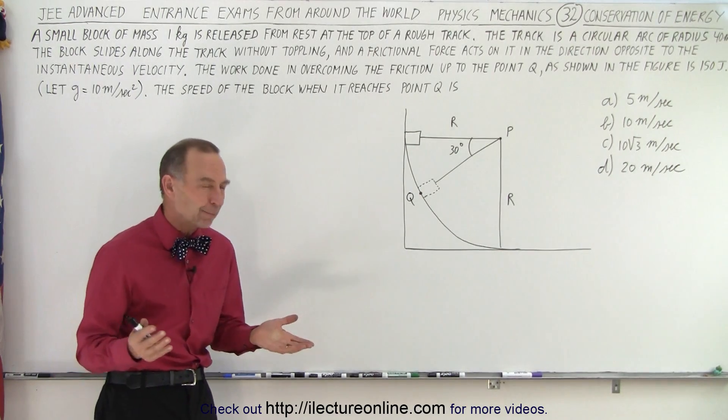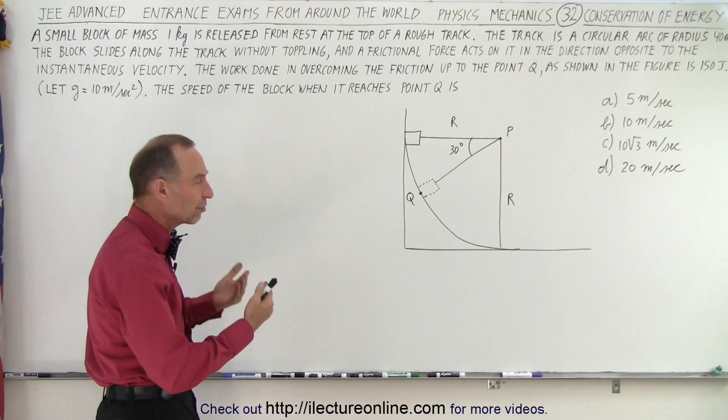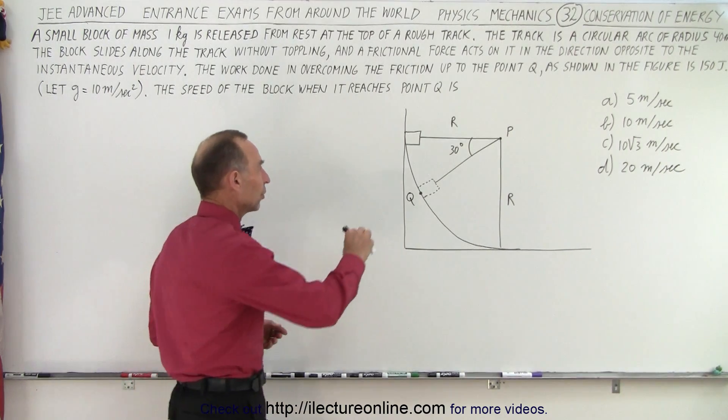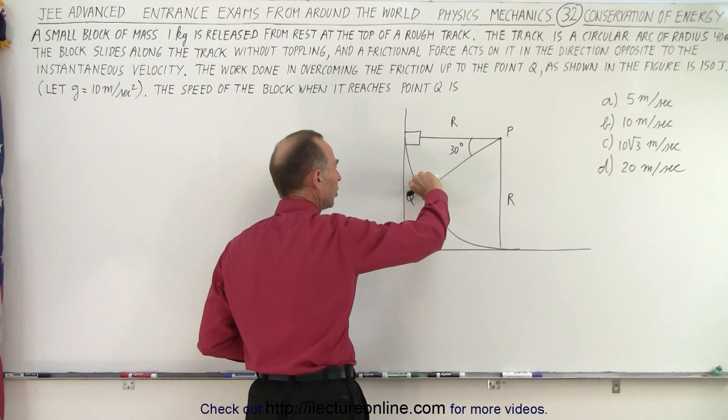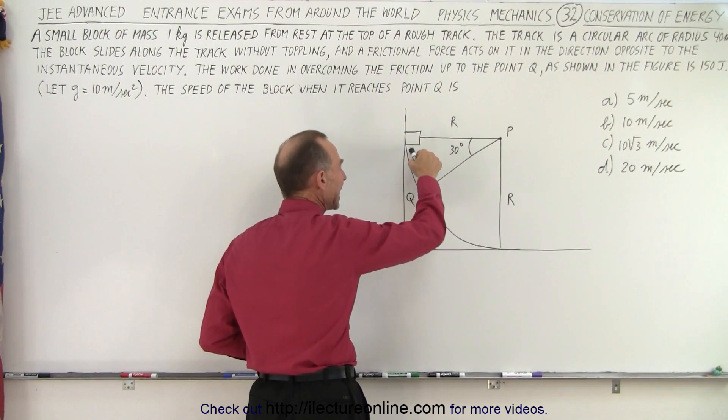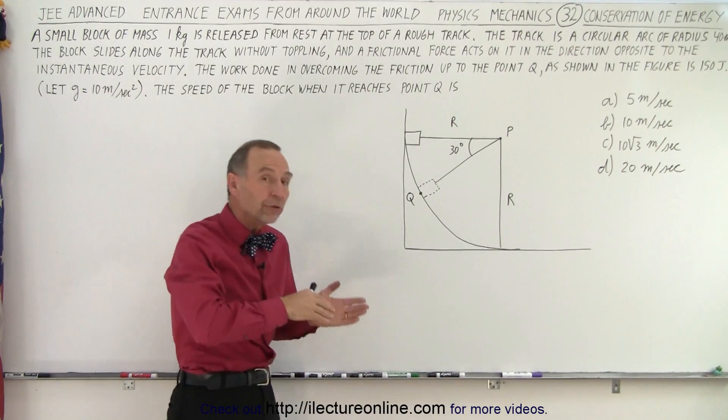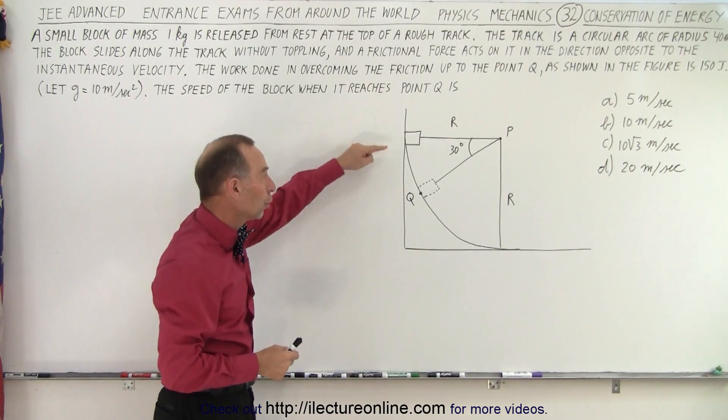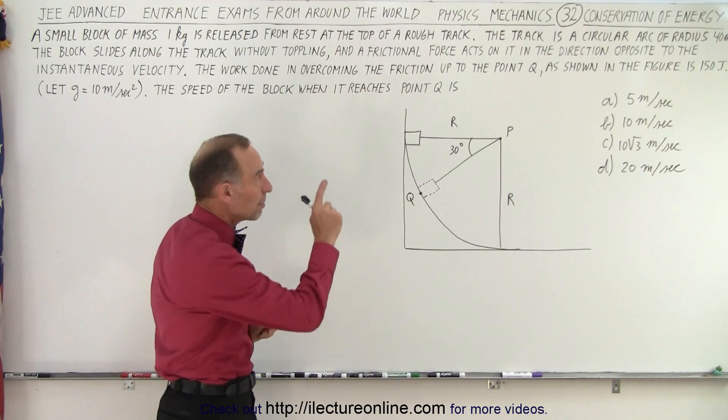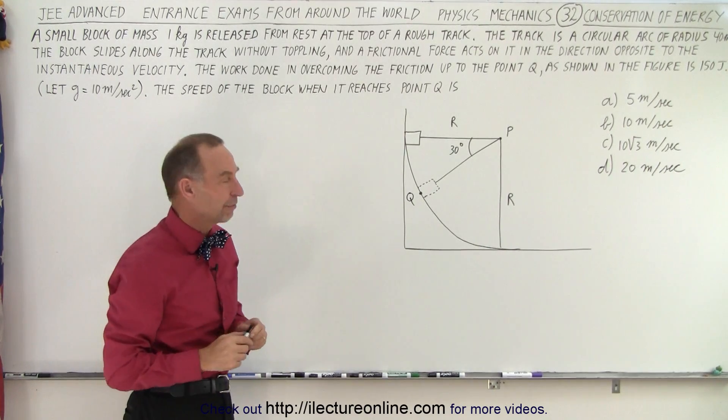So how do we do that? Well it turns out it's a conservation of energy problem. You can see that when the block starts over here, as the block comes down it will lose potential energy. It will then also gain kinetic energy, but not all of the potential energy is converted to kinetic energy because some of it is lost due to friction. They tell us the amount lost due to friction is 150 joules.